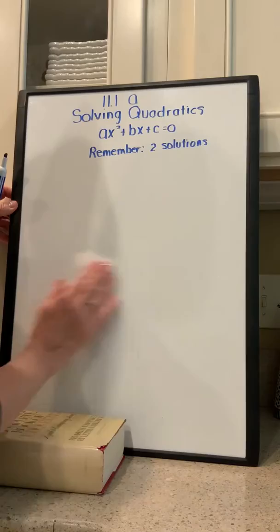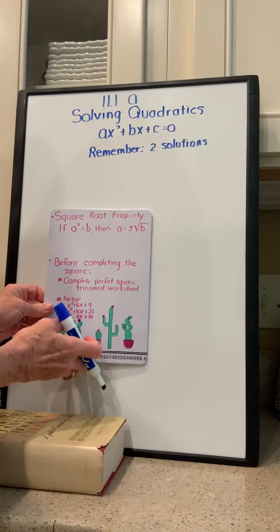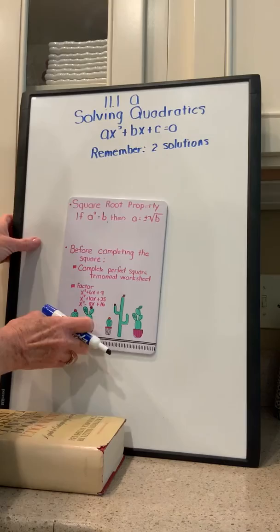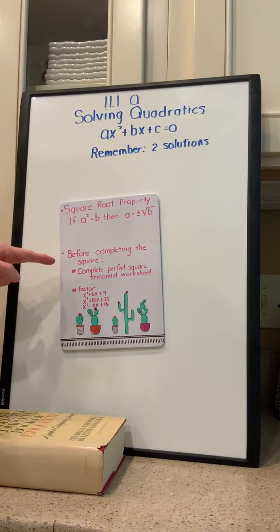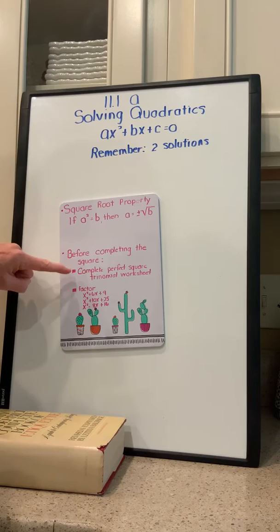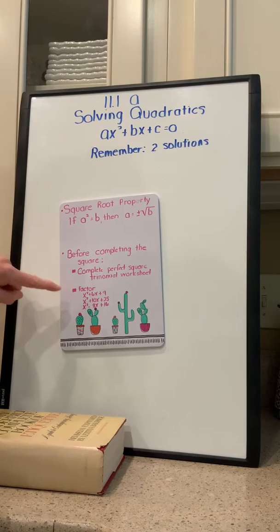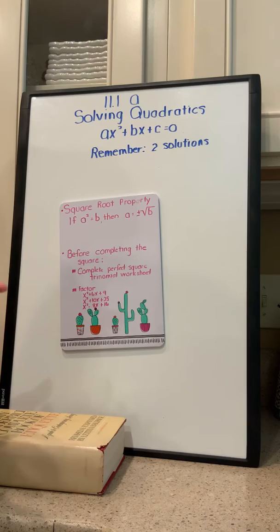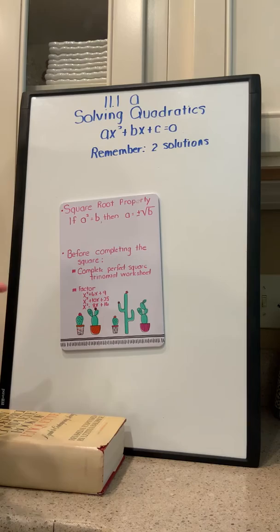Before you view the next section, I have sent you a worksheet for completing perfect square trinomials. Please make sure you complete that worksheet before you look at 11.1b. Also make sure that you can factor these three trinomials quickly. When I upload stuff like this, I'll also try to send you a link to a Khan Academy lecture that is similar. Thank you.